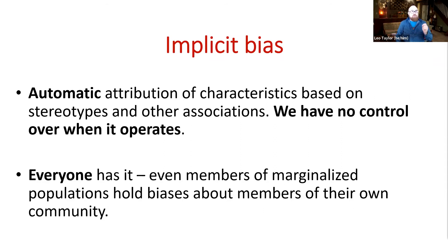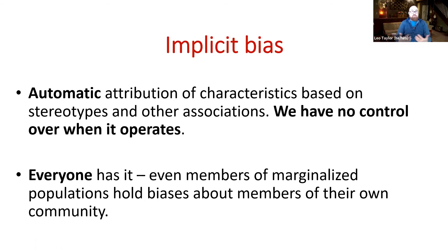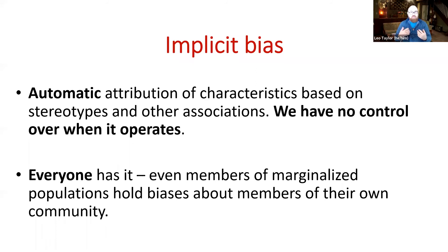Most importantly, everyone has implicit bias — even members of marginalized populations hold biases about members of their own communities. You saw an African-American man in the video talking about how, because of breathing this fog, deep down inside he's been trained to believe that Black men are violent. People of the LGBT community, for example, hold biases about members of their own communities. Everyone is susceptible to developing these biases.